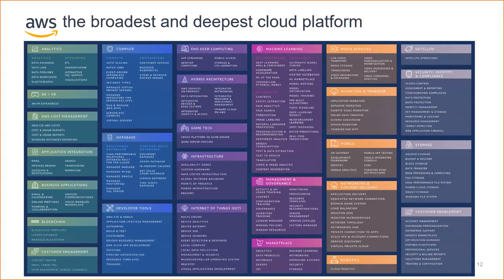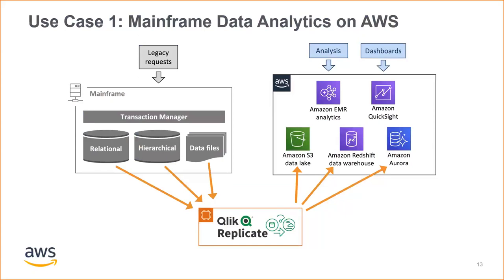Now we'll see how customers leverage Qlik Replicate to create business value through specific use cases. The first use case is about augmenting mainframes with agile data analytics services on AWS. Mainframe data can include decades of historical business transactions for massive numbers of users — a strong business advantage customers want to benefit from. We see customers use big data analytics to unleash mainframe data's business value. We provide services for the full data lifecycle from ingestion to processing, storage, analysis, visualization, and automation. This use case is also applicable to infrastructure operational analytics, since mainframes are expensive and complex — customers constantly optimize to reduce CPU or MIPS consumption.